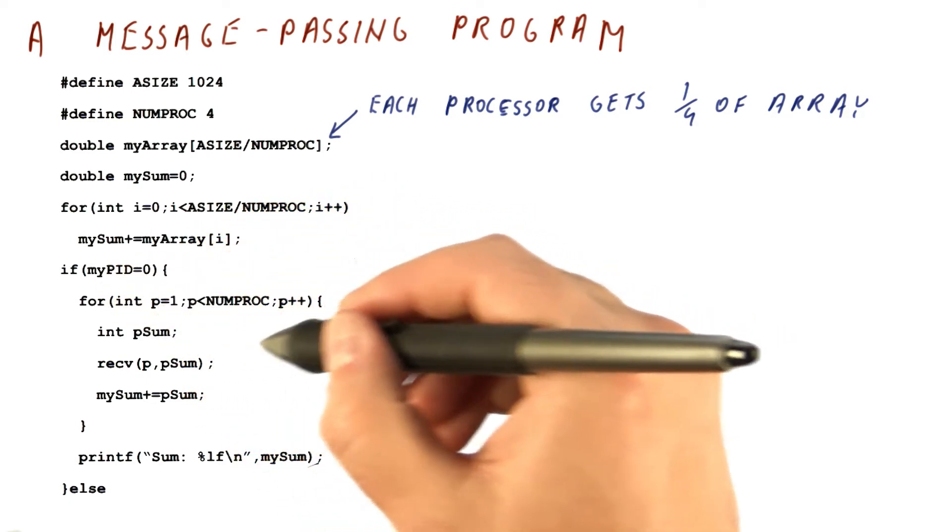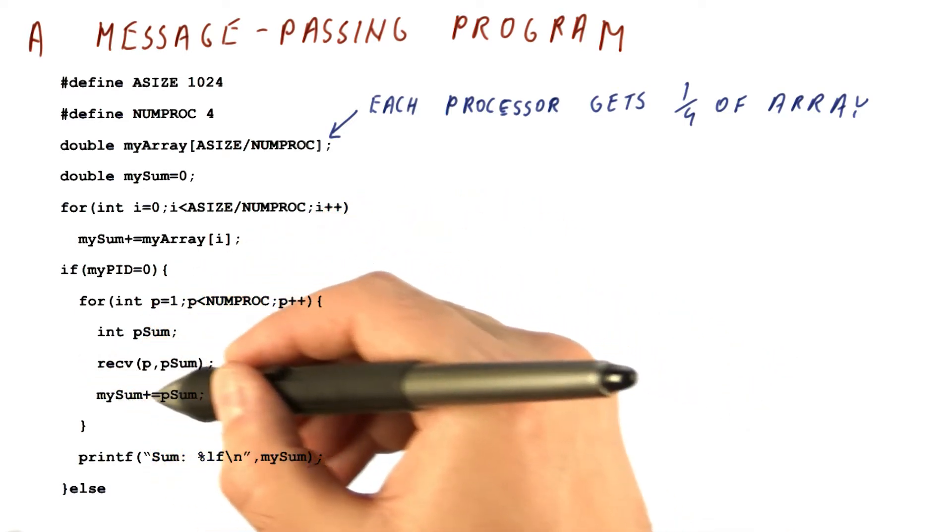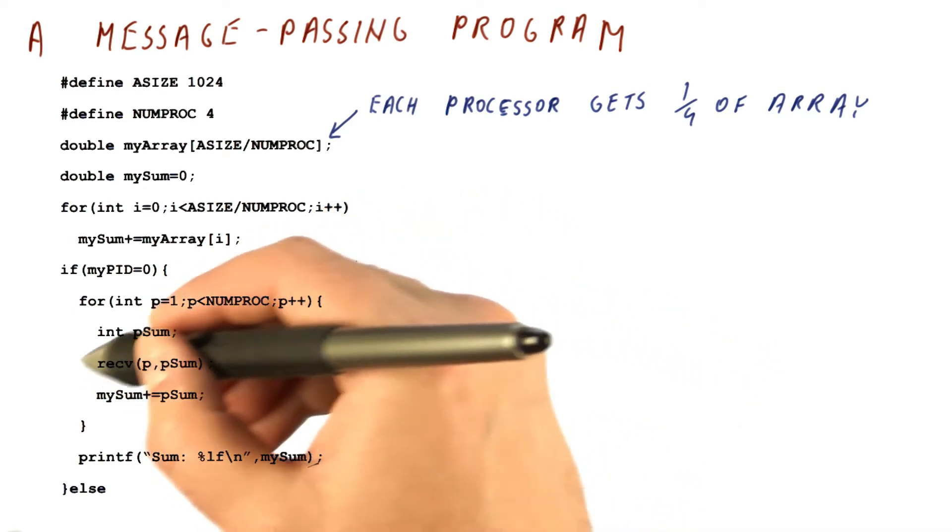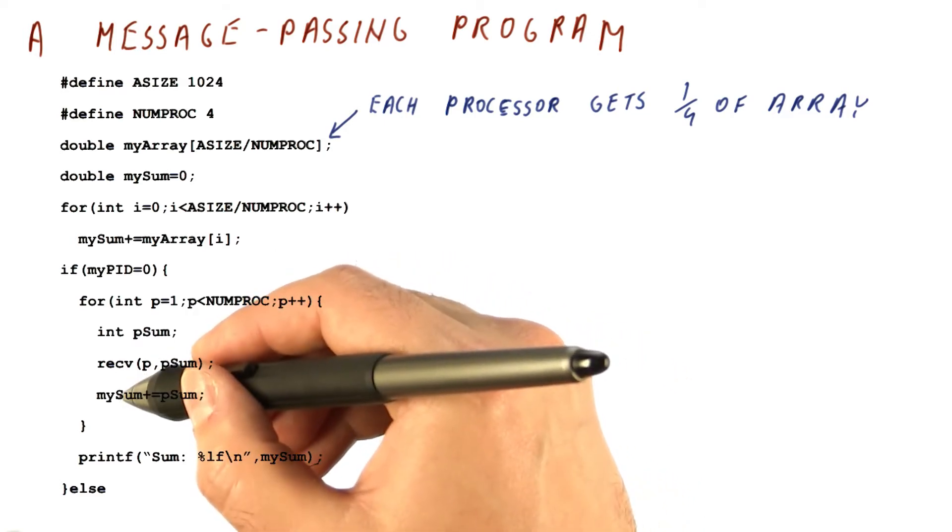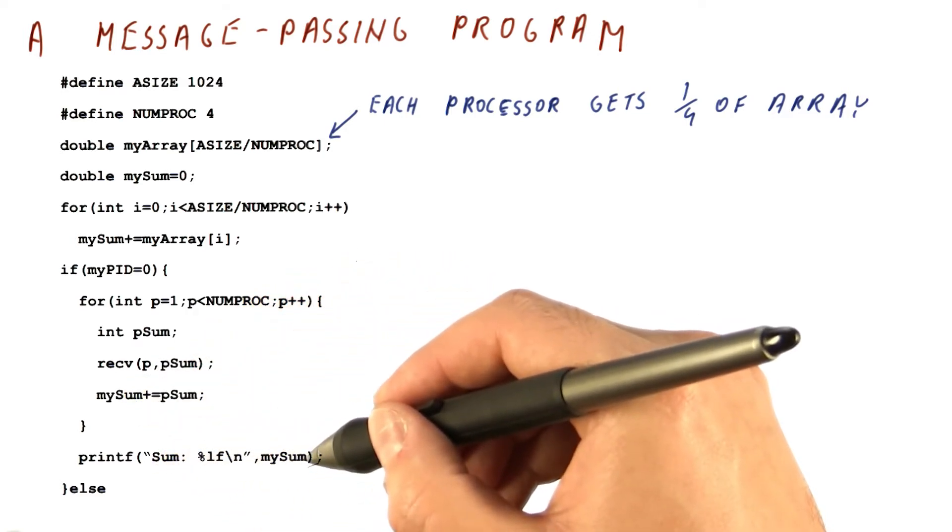So what we will do is we will have one of the processors act as the summing up agent. And it will, for every other processor, receive the sum sent by that processor, and add it to its sum, and then print the final overall sum.